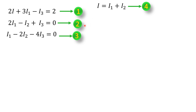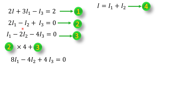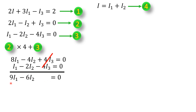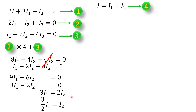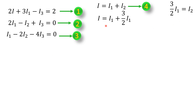Now we have 4 equations. Solving Equations 2 and 3 together: multiplying Equation 2 by 4 gives 8I1 minus 4I2 plus 4I3 equals 0. Adding with Equation 3 and cancelling terms, we get 9I1 minus 6I2 equals 0. Dividing by 3: 3I1 minus 2I2 equals 0, so I2 equals 3/2 I1. Substituting into Equation 4: I equals I1 plus 3/2 I1, giving 2I equals 5I1.